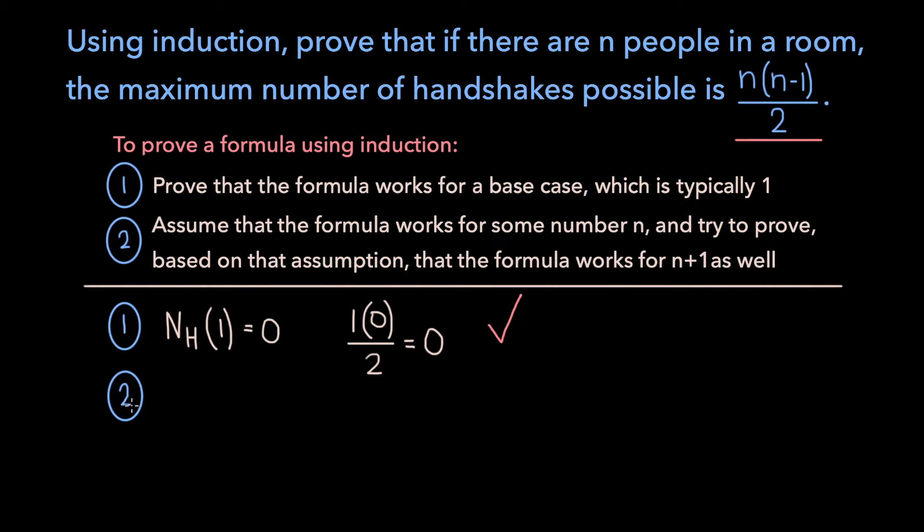Now for the actual induction step, we are assuming that the number of handshakes possible in a room of n people is n times (n-1) over 2. And based on this, we are trying to prove that when there are n+1 people in the room, the maximum number of handshakes possible is (n+1) times n over 2.